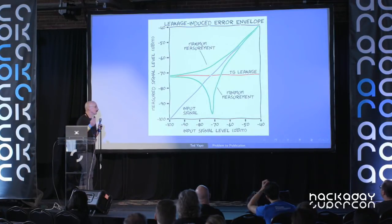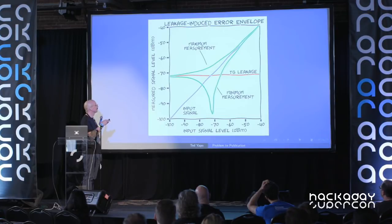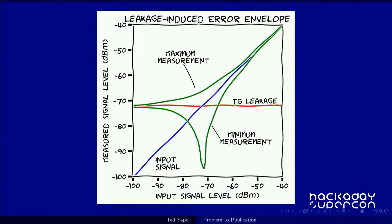You can put error bounds on this. The tracking generator leakage was about minus 73 dBm. Plotting the input signal level, you can make an upper and lower bound — your measurements are guaranteed by this model to be within a green envelope. For example, if the leakage and signal are exactly the same power, you can measure plus 6 dB higher or minus infinity dB. You're actually adding voltages: two signals at the same voltage gives twice the voltage, four times the power, and 6 dB higher.